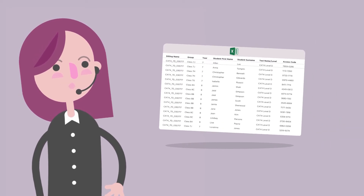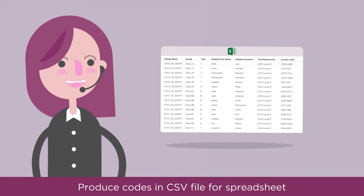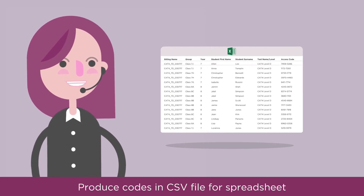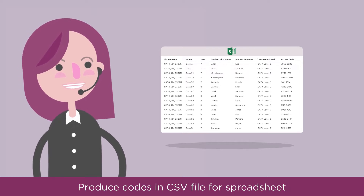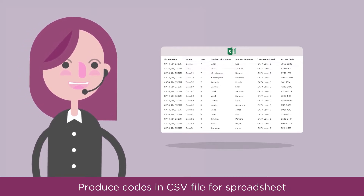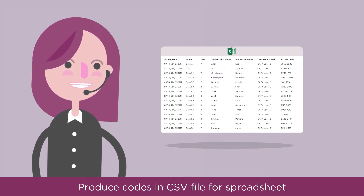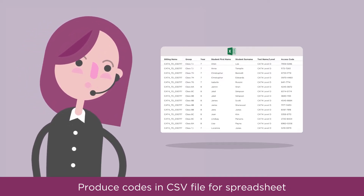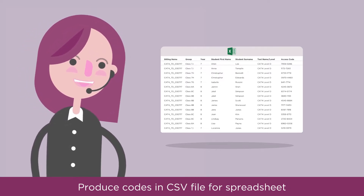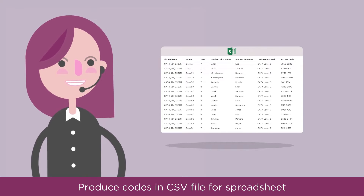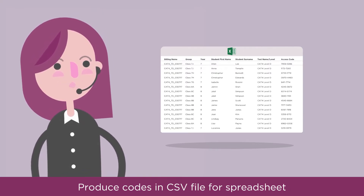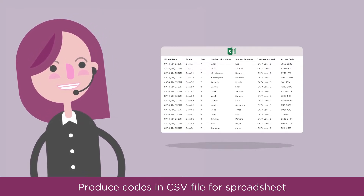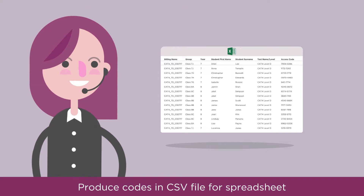Clicking on the padlock produces the access codes in PDF format, whereas clicking on the spreadsheet icon produces access codes in a CSV file format. Downloading in CSV format allows you to sort the students, making it easier to distribute codes. We recommend this method when you have a large number of students in one sitting.